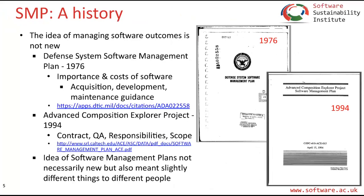The idea of managing software outcomes isn't new. In 1976 there was a defense system software management plan covering the importance and costs of software, how software was acquired, developed, and maintained. Another example is the Advanced Composition Explorer project in 1994, where their software management plan was essentially a contract covering quality assurance responsibilities and scope between different partners developing the ACE experiment, which was going to look at the solar corona among other things. So the idea of software management plans is not new, but joining those words together doesn't mean people mean the same thing.